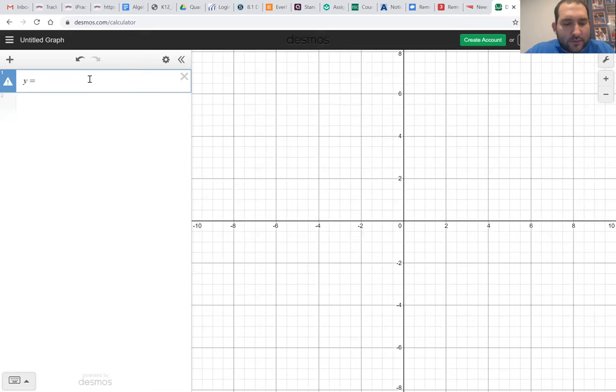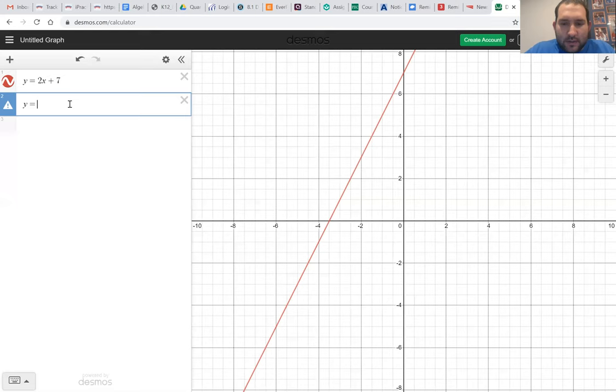So make one up: y equals 2x plus 7. It shows you the graph there. If you want to add another box, click below it and we can say y equals negative 4x minus 2. So you have two graphs there.